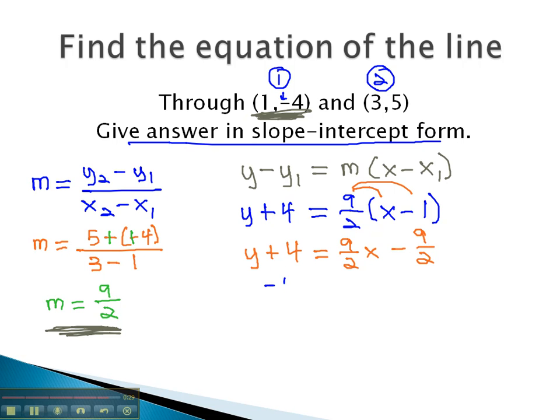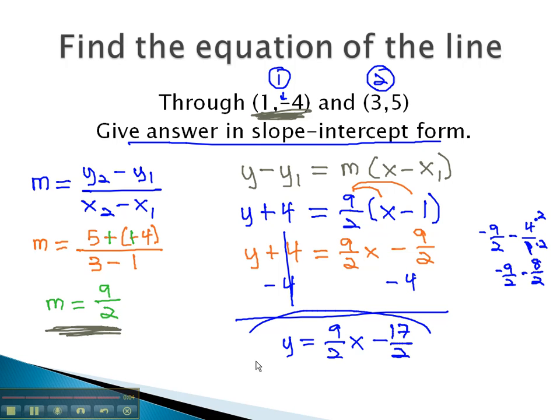Finally, subtracting 4 from both sides, we'll solve the problem. y equals 9 halves x minus, we've got negative 9 halves and negative 4, which is over 1, multiplying by 2 to get a common denominator. Negative 9 halves minus 8 halves is negative 17 halves. This is our equation in slope-intercept form.